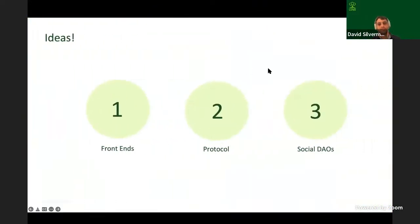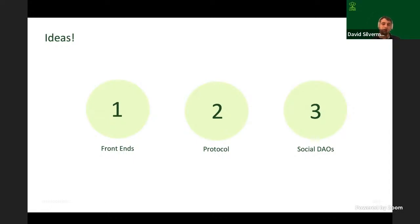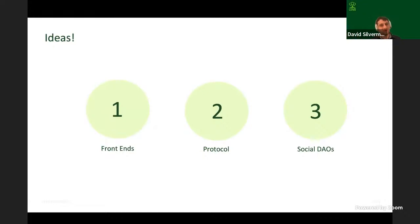Ideas for things to build: you can build great front ends — the community manages one at alpha.lenster.xyz to play around with the social graph. You can make extensions to the protocol by using modules in different ways. Maybe you want to build subscriptions — send the Follow NFT to a smart contract with logic requiring a recurring payment. Maybe you want to integrate a DeFi app into collects so incoming creator money gets deposited, increasing your TVL. Or push the experience of social further — what does a shared profile mean? How do we do on-chain governance via a social graph and move away from the current model of just having a social token as an ERC-20?